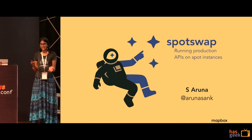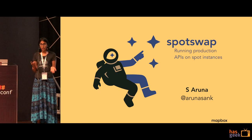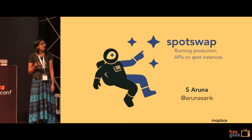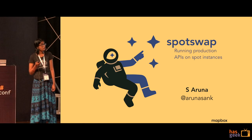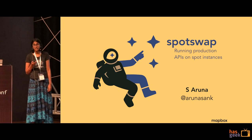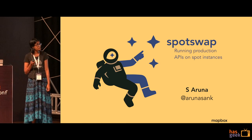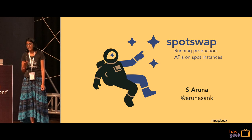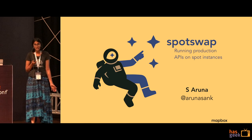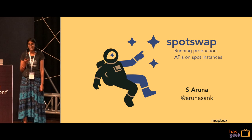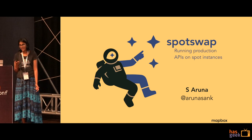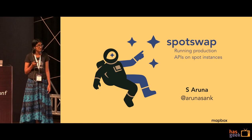I work as a production engineer at Mapbox, where I build systems that scale and in a very small way lay the technical foundation on which all of Mapbox's services run. Today I'm going to be talking about SpotSwap, which is a module that we built in-house. It's also a very interesting architectural concept. We do use AWS across all our services, so this talk can be a little heavy on the AWS jargon, but I've tried to break this down wherever possible.